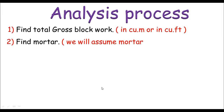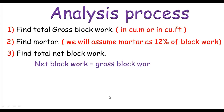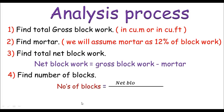Then we'll find the mortar — we'll assume the mortar is 12% of the block work, and this can be taken from the specification. By subtracting the mortar from the total gross block work, we get the net block work. Then we find the number of blocks by dividing the net block work by the volume of one block.